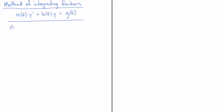I would actually call this method the backward product rule. What I mean by that is we're trying to get the ODE that we're given into a form that makes it look like it's the result of a product rule, and we're going to go backwards as part of our solving the equation.